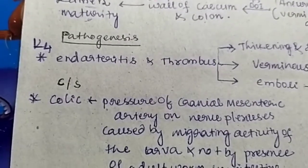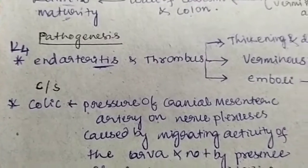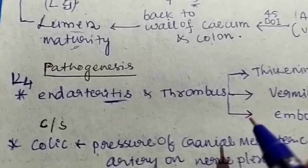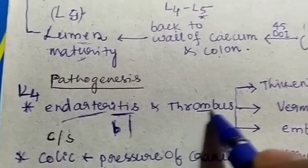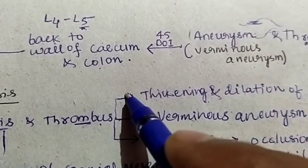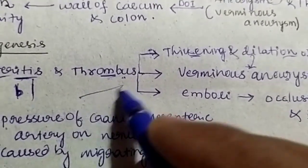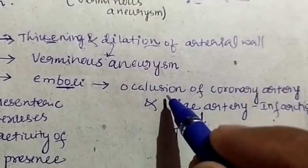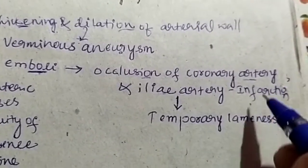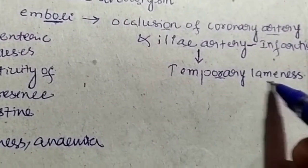Now let us come to the pathogenesis. L4 stage larvae in the anterior mesenteric artery cause endarteritis, which is inflammation of the inner wall of the arteries. This leads to thrombus formation, which initially causes thickening and dilation of the arterial wall, inducing verminous aneurysm. If the thrombus detaches, it leads to embolism. This may cause occlusion of coronary artery and iliac artery, leading to temporary lameness in the host.